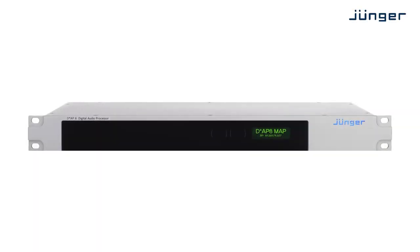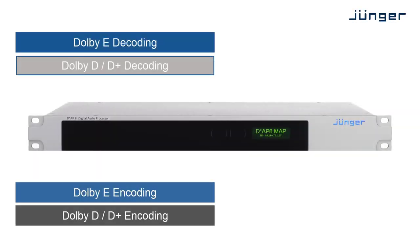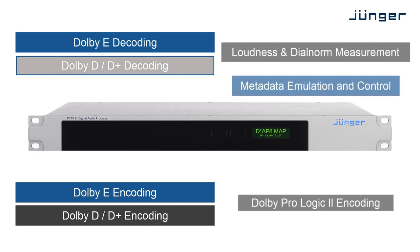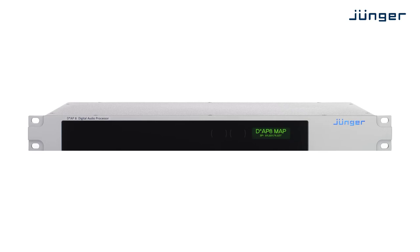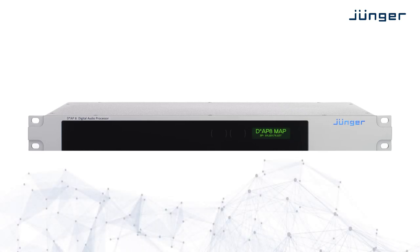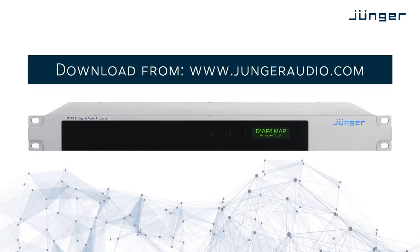The MAP can be fitted with Dolby decoders and encoders and is then enabled to replace up to seven individual Dolby processors with only one unit. With the new functionality, the MAP is the most versatile Dolby certified workflow solution available today. And of course, the new firmware featuring Access DP can be downloaded and installed free of charge by all MAP users.